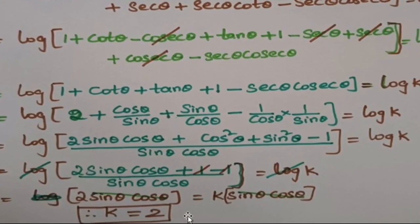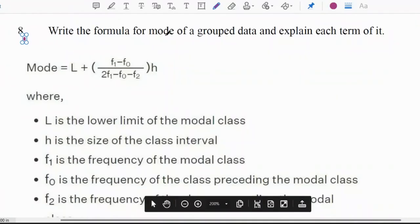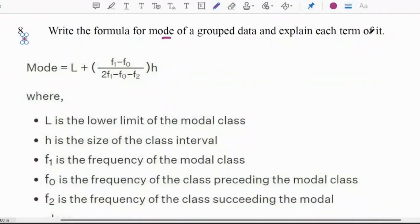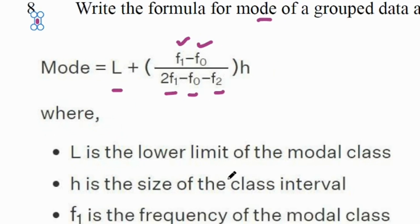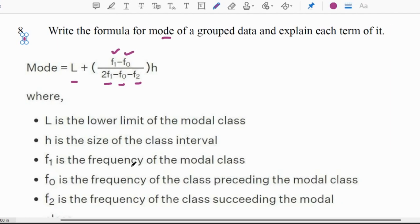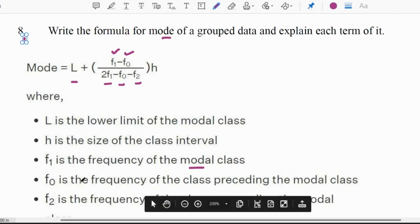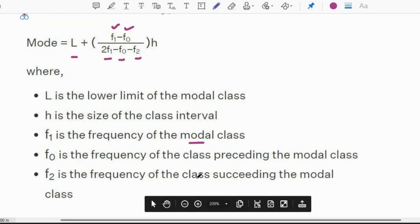Taking LCM we get the value of k. Eighth question: write the formula for mode of grouped data and explain each term. The mode formula is L + [(F1 − F0)/(2F1 − F0 − F2)] × H, where L is the lower limit of the modal class, H is the class size, F1 is the frequency of the modal class, F0 is the frequency of the class preceding the modal class, and F2 is the frequency of the class succeeding the modal class.